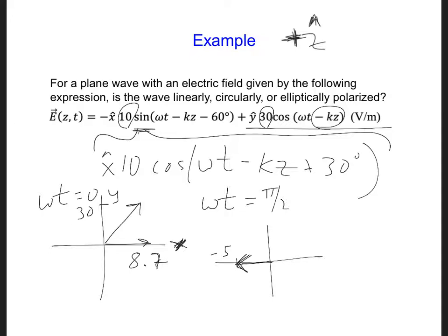it one step further, and we can say ωt is π. At that point, the x component has a value of minus 8.7. And the y component has a value of minus 30.